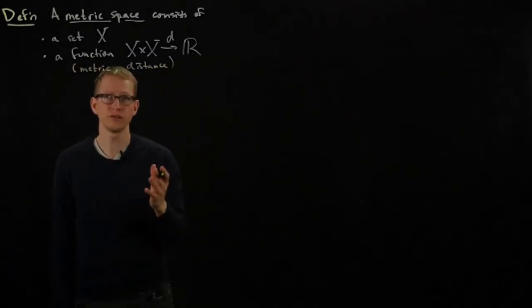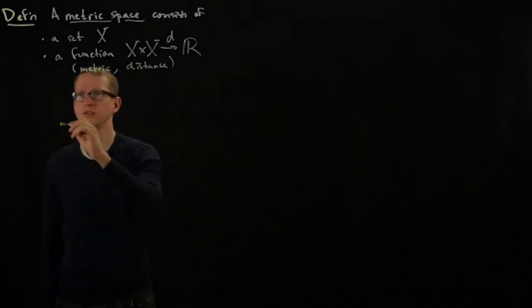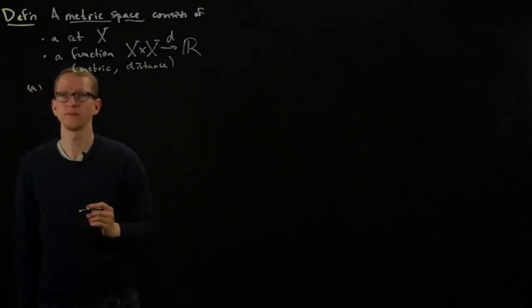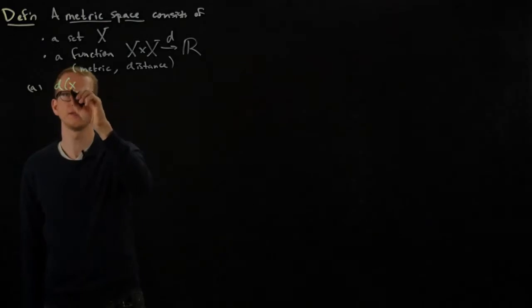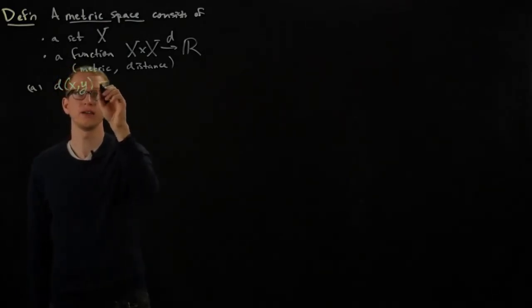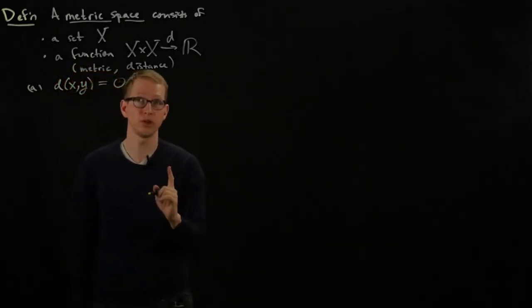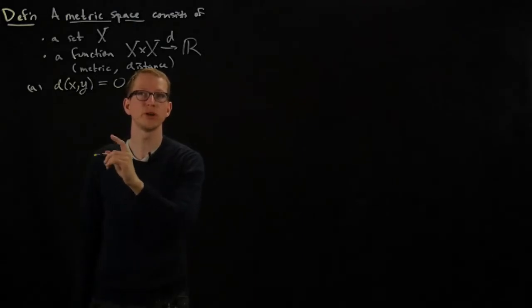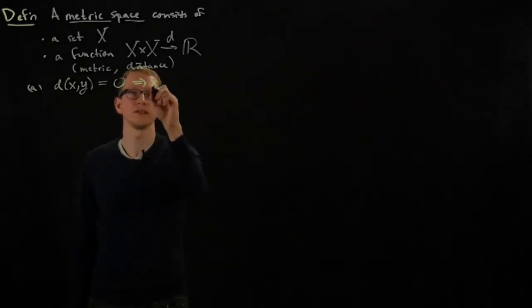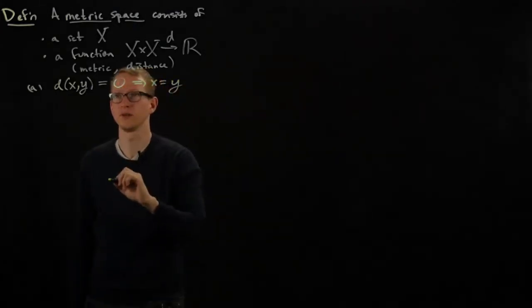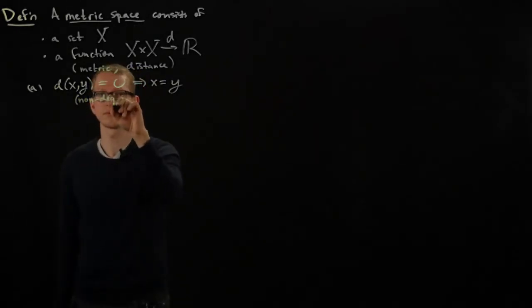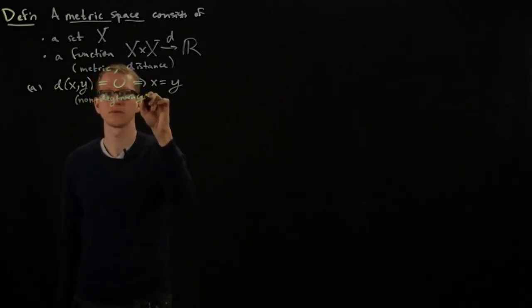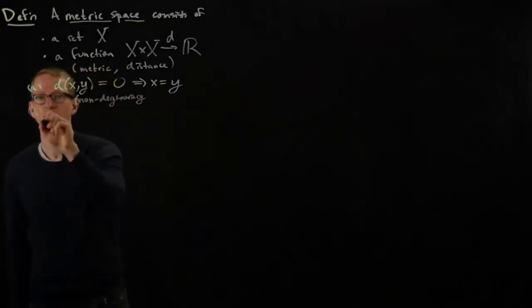These two things have to satisfy a bunch of conditions. First of all, we demand that the distance from x to y, if it happens to be zero, then that means the two points were initially the same points to begin with. So this is called non-degeneracy.